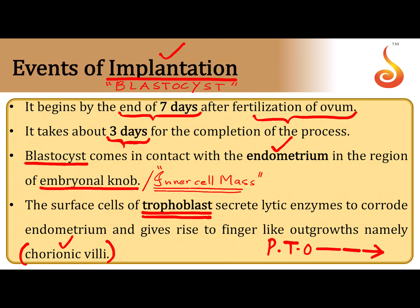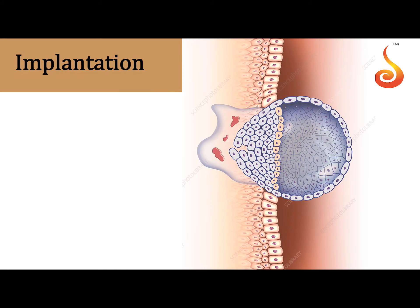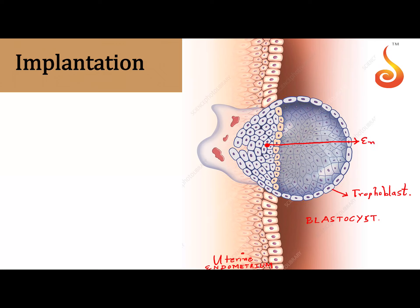Now we move to the next slide to clearly understand what is happening. This is the blastocyst and this is the uterine endometrium — the inner lining of the uterus. The outermost lining of the blastocyst is called the trophoblast. There is a cavity inside, and the mass of cells sitting inside is referred to as the embryonal knob, or by its common name, the inner cell mass.